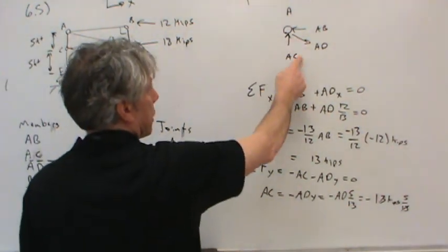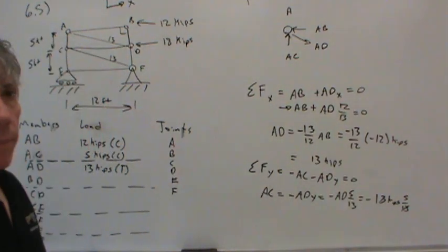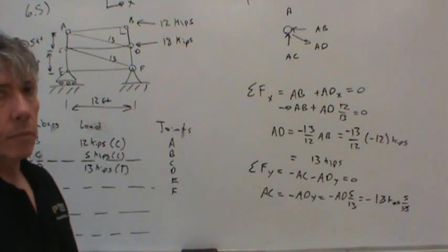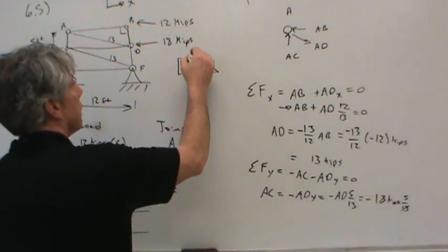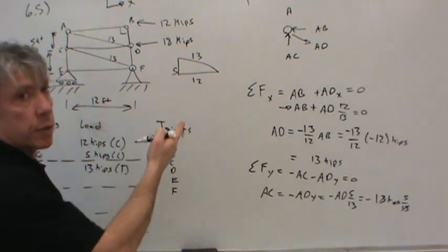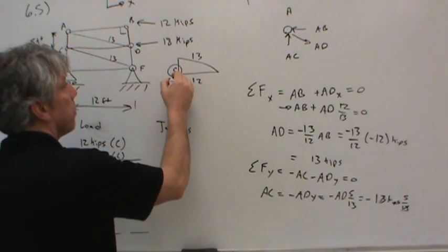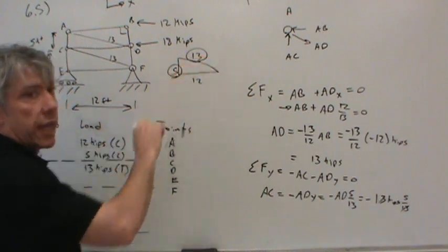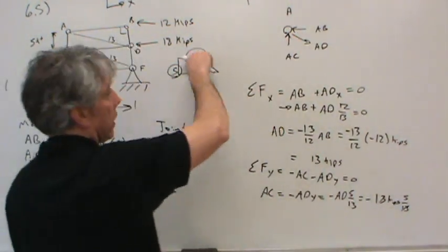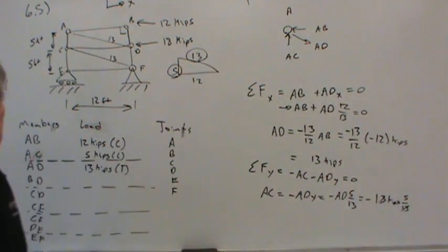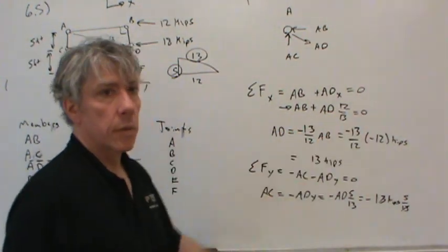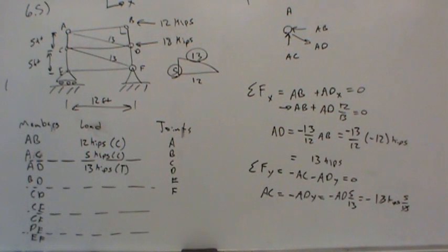To get the 5/13 vertical component: looking at the 5-12-13 geometry triangle, if you want the vertical component of something along that line, you take 5/13 of it; for the horizontal component you take 12/13. So BD = 0 and we have results for AB, AC, AD.